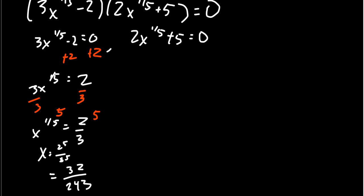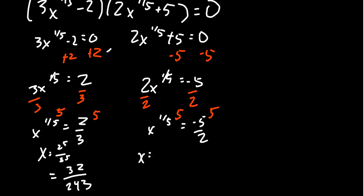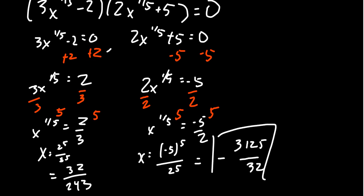For the second equation, subtracting 5 from both sides: 2x^(1/5) = -5. Dividing by 2: x^(1/5) = -5/2. Since we have a 5th root, there's no domain problem with the right-hand side being negative. Taking the 5th power of both sides gives x = (-5)⁵/2⁵ = -3125/32. So our two solutions are x = 32/243 and x = -3125/32.